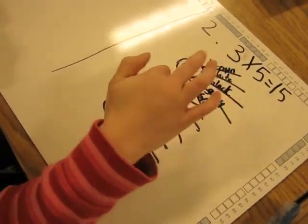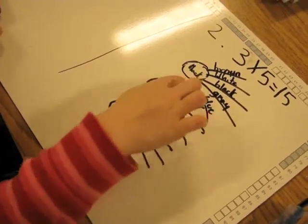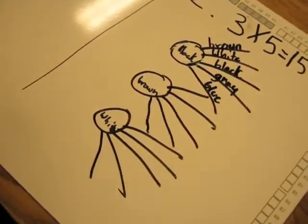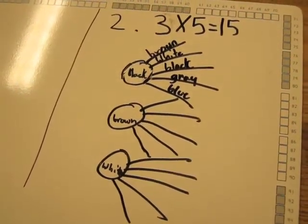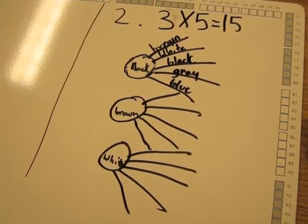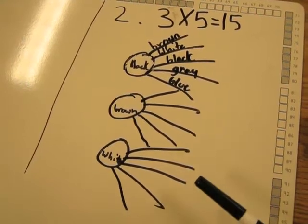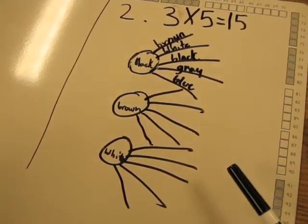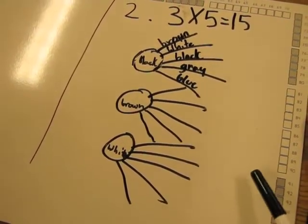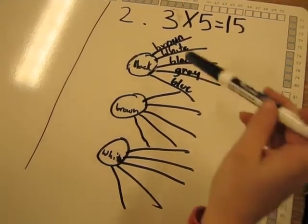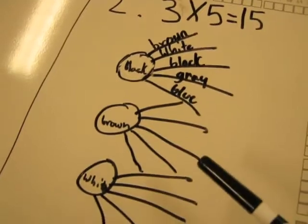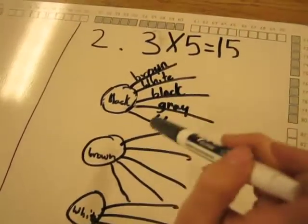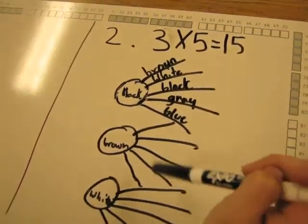I drew three circles for black, brown, and white for the shoes, and I drew five lines to my spouse for the socks, and the brown, white, black, gray, blue socks. And I counted all the lines, and it was fifteen.